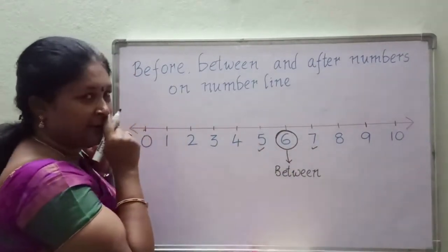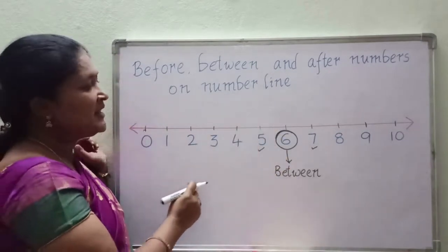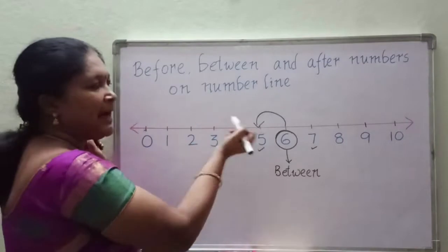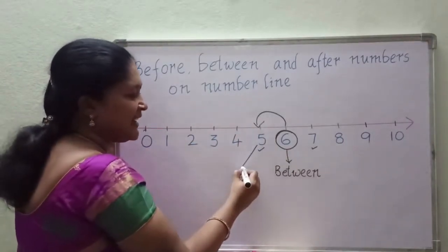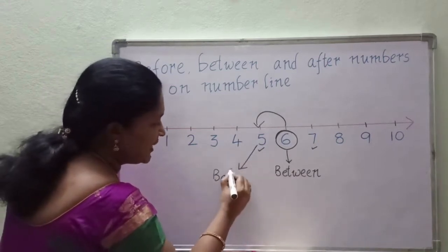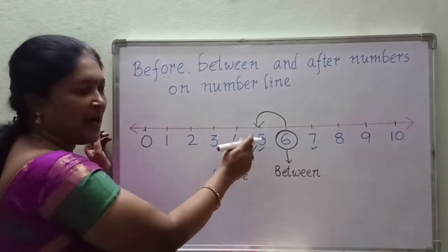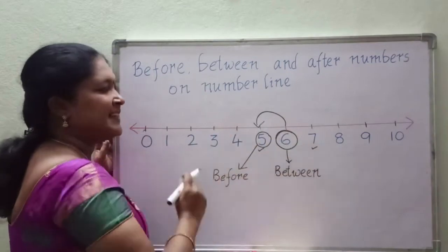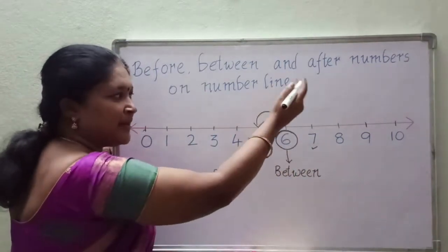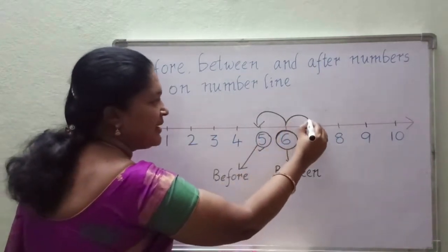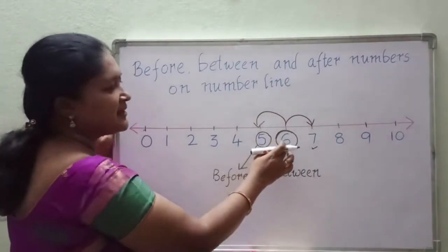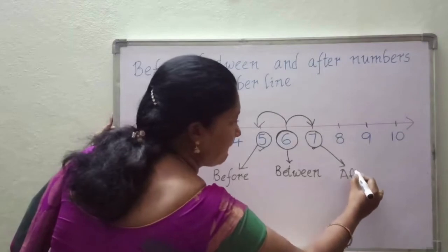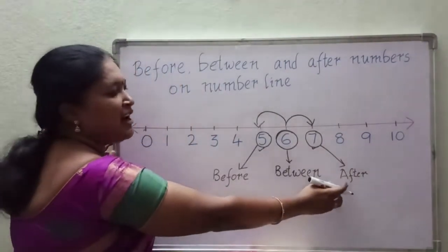Now tell me, what is the before number of 6? Before number means backward counting. So what is the before number of 6 children? 5. Yes, 5 is the before number of 6. And now, what is the after number of 6? After number means forward counting. Move to the next number. So 6 — after which number came? 7. So 7 is the after number of 6.